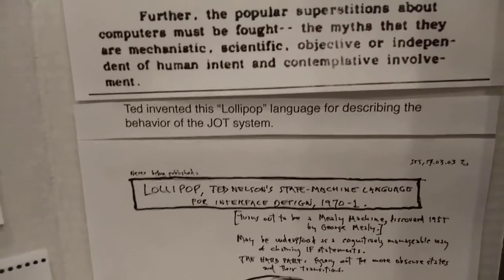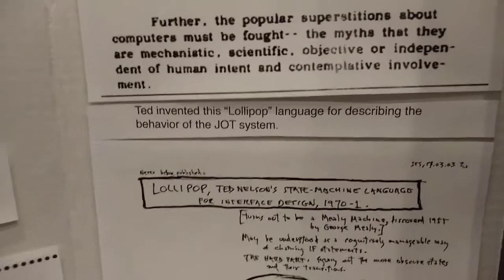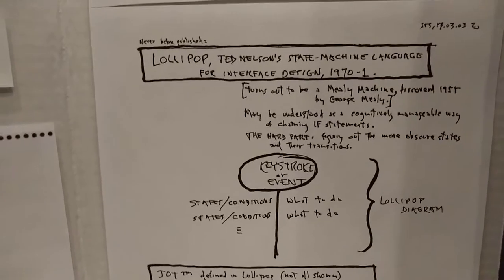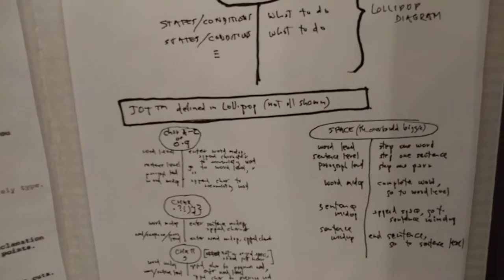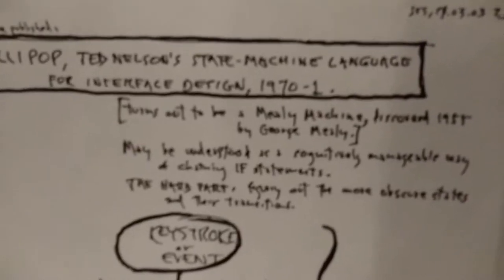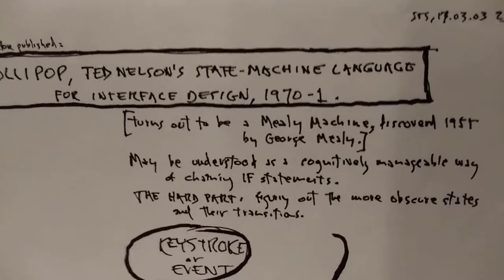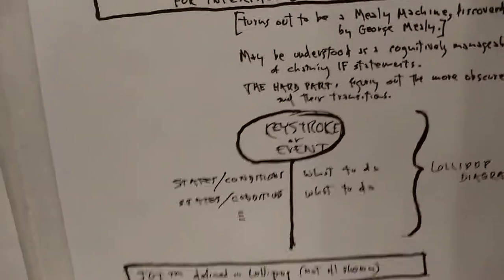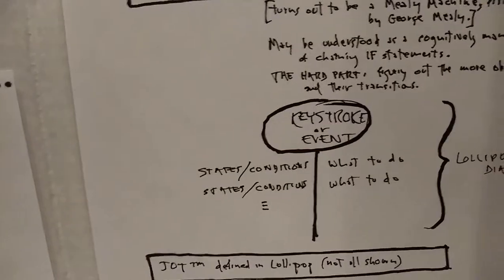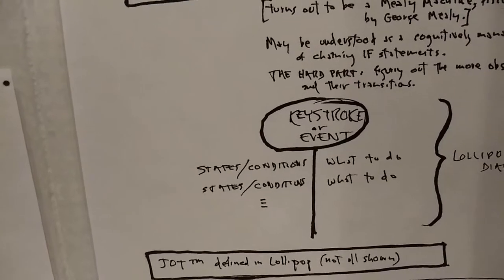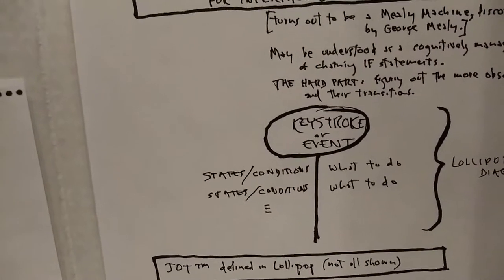It was very innovative, and he actually invented a language for describing to programmers how this system should work. He called it lollipop, because of these lollipop diagrams. It's sort of an object-oriented methodology, and it turned out it's also a Mealy machine — a keyboard language where, based on what a keystroke does, it's a state machine about what to do when each keystroke is received.